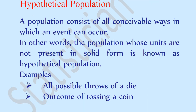Examples of hypothetical population are possible throws of a die and outcomes of tossing a coin. Hypothetical population is obtained by the outcomes of an experiment. Here, throwing a die and tossing a coin are experiments, and the population consisting of their outcomes is called the hypothetical population.